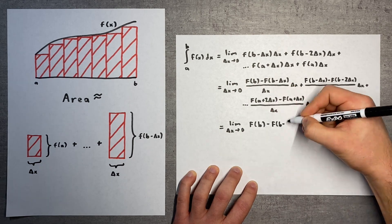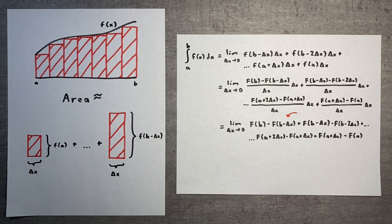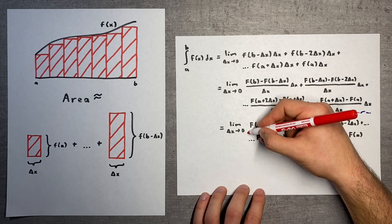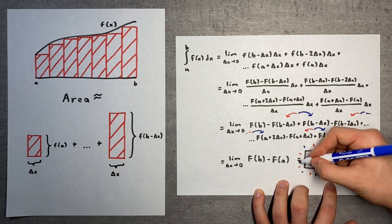Now something remarkable happens. The delta x's all cancel, and nearly every term in the sum appears next to a negated version of itself. These all disappear, leaving us with only F of b minus F of a.